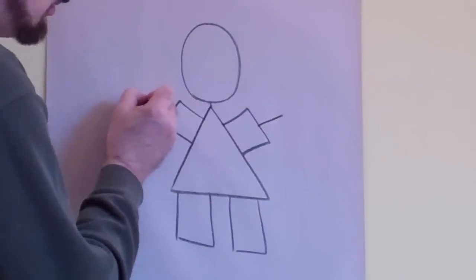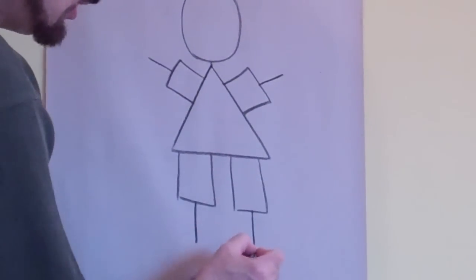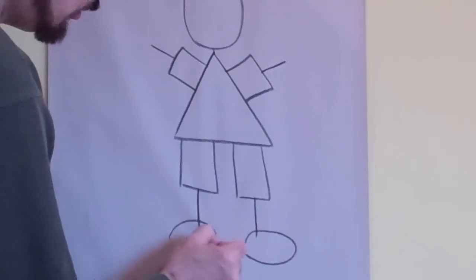His arms and legs are lines. His sneakers are ovals. One, two.